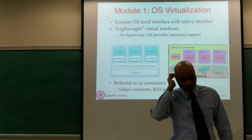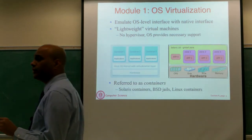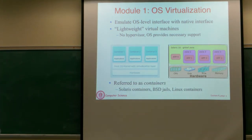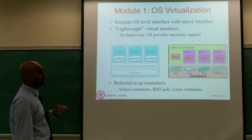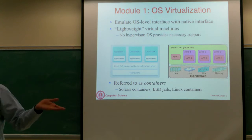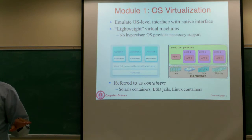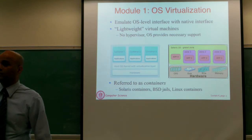Now we will switch gears and talk about OS-level virtualization. When you talk about OS-level virtualization, you're using the OS interface — the native OS interface — to emulate another OS interface. Virtualization is essentially a technique that allows you to take one software interface and emulate another software interface on top of it. In the case of OS-level virtualization, you're going to use one OS interface to emulate another one. You can essentially mimic system calls of a completely different operating system using the native system call interface, or use one version of a kernel to emulate a previous version of a kernel.